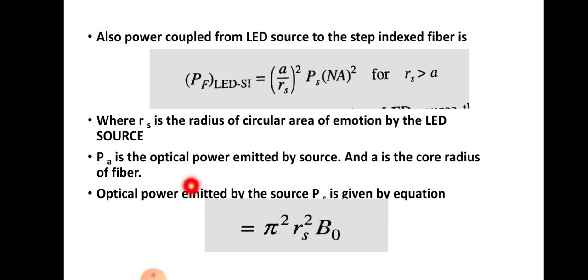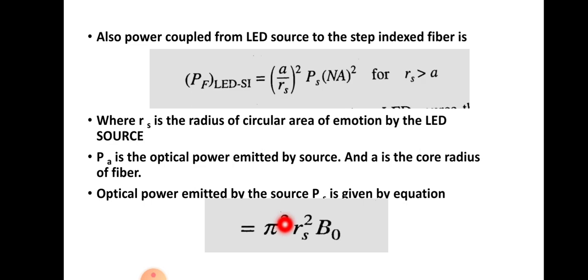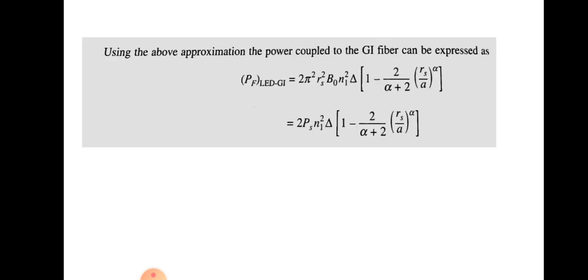Here Ps is the optical power emitted by the source, a is the core radius of the fiber, and the optical power emitted by the source Ps is given by: Ps = π² · rs² · B₀, where B₀ is the radiance or brightness of the source and rs is the radius of the emission pattern. In the case of graded index fiber, the power coupled from the LED source into the fiber is: